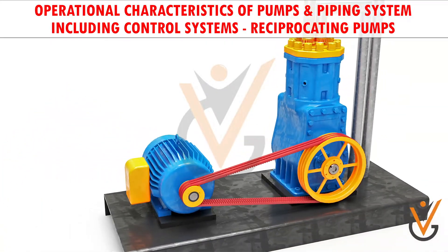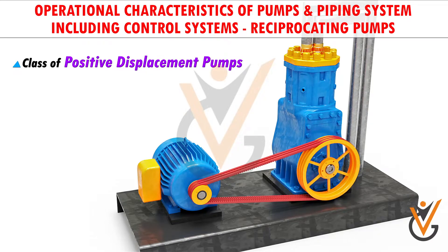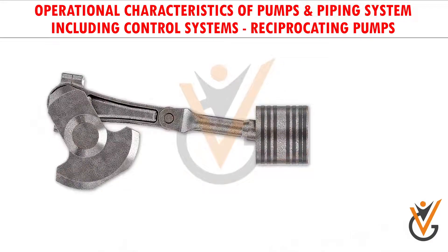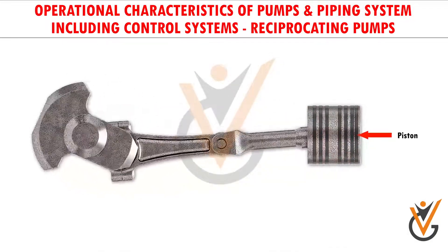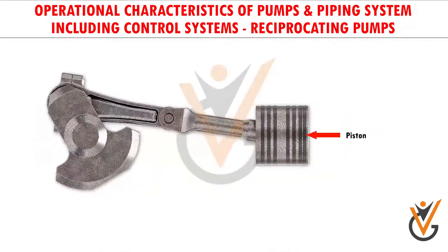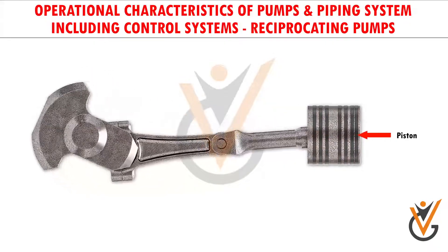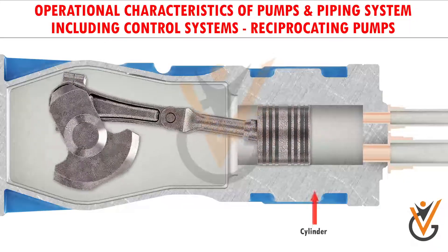Reciprocating pumps are a class of positive displacement pumps. They change mechanical energy into pressure energy. They use a piston for pumping liquid from one location to another location, and the piston or plunger reciprocates inside the cylinder.